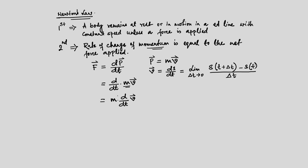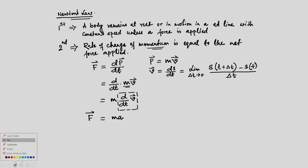The rate of change of velocity is called acceleration — the acceleration the body is going to experience. So this is nothing but mass times acceleration. Therefore, the force we apply is effectively mass times acceleration. That is what we get from Newton's second law.